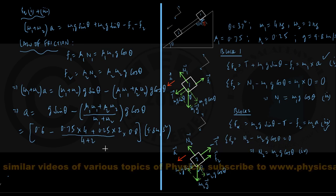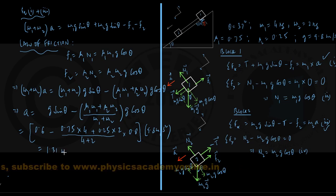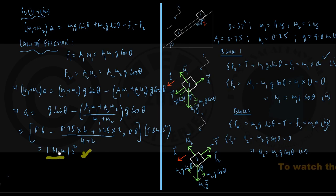Complete the calculation and show that the value of a is coming out to be about 1.31 m per second square in three significant figures. So we conclude that both the blocks move down the incline with the same acceleration of about 1.31 m per second square.